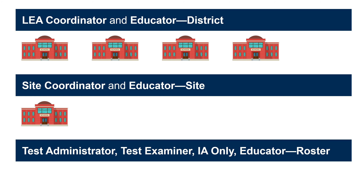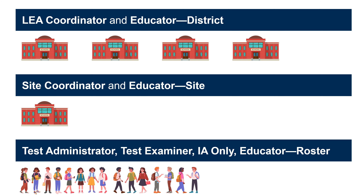Also, these roles will not see student results grouped by teacher or class unless groups have been assigned to them. TOMS users with the Test Administrator, Test Examiner, IA Administrator only, or Educator roster roles will only see students who are assigned to them through the Manage Student Groups process. If no students are assigned to them, they can log into CSRS but they won't see any results. The CSRS User Guide User Roles and Permissions section has more information, and that link is in your resource guide.